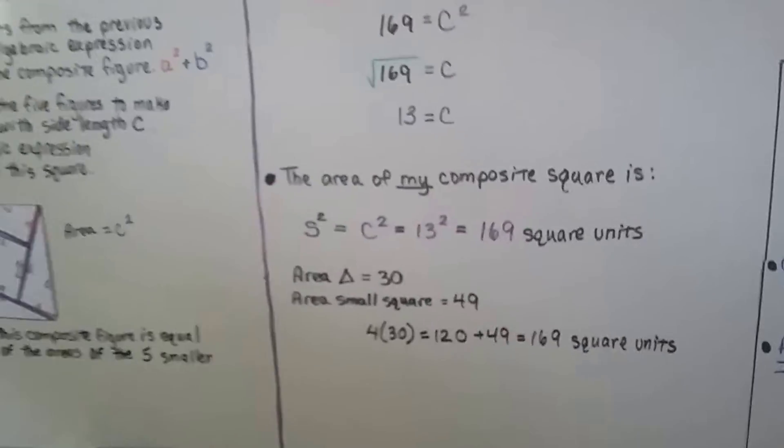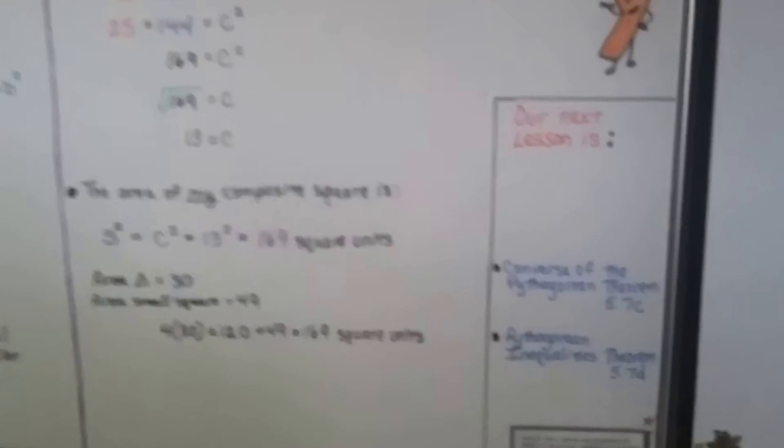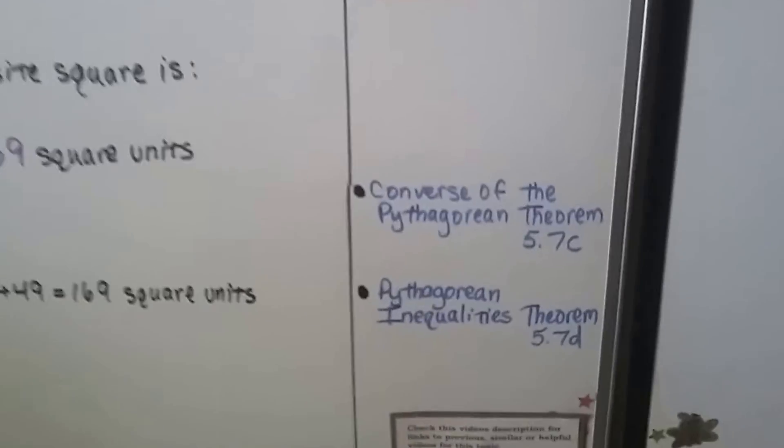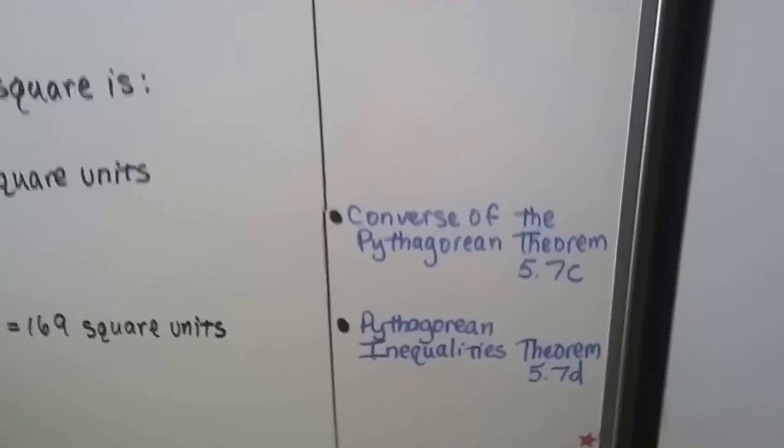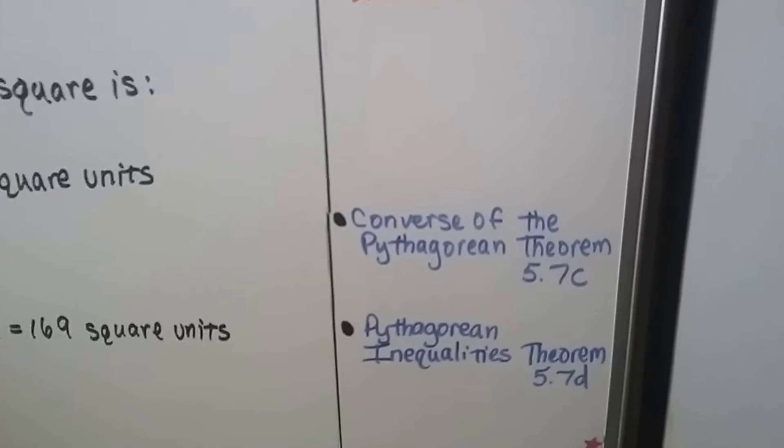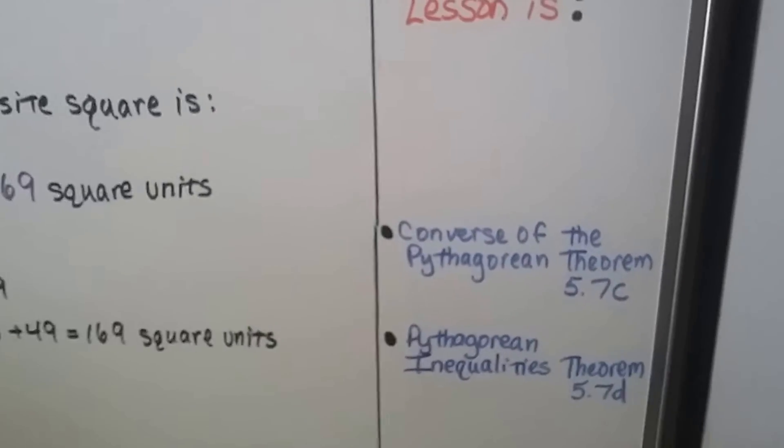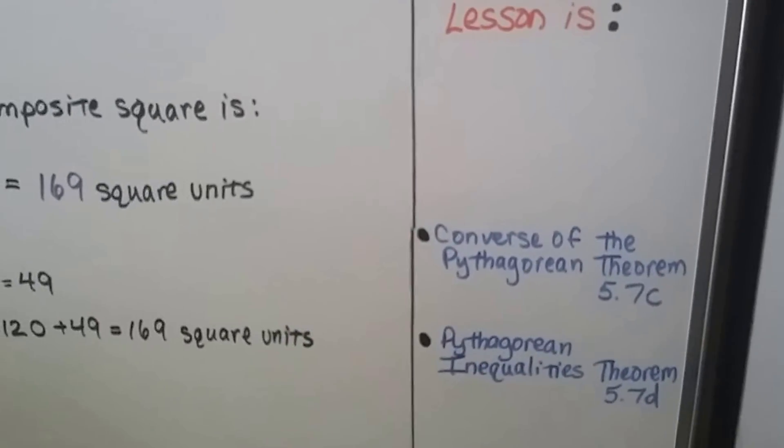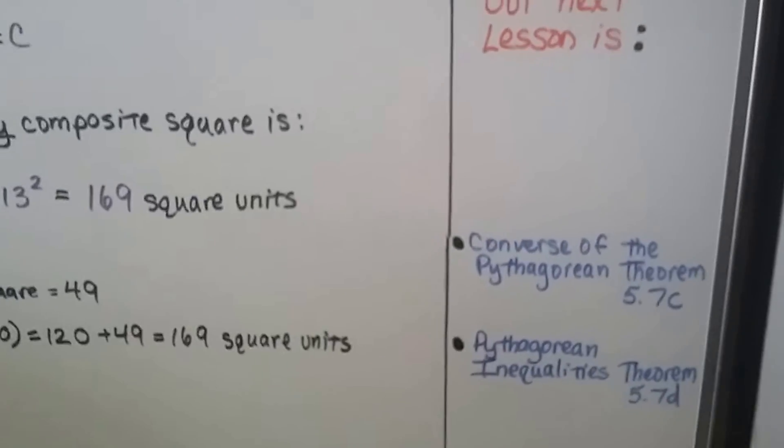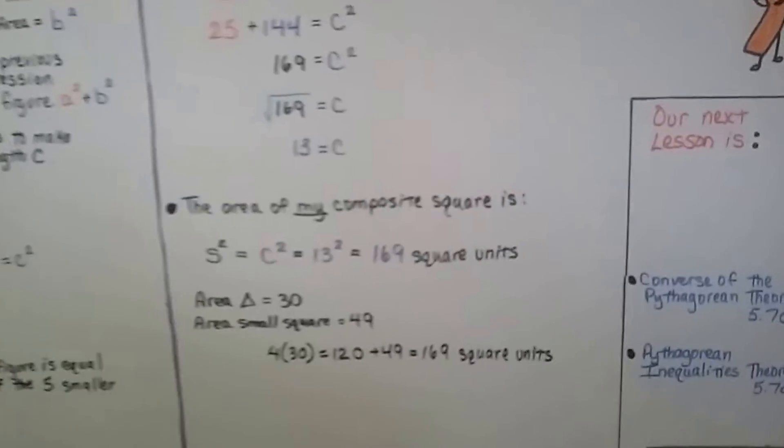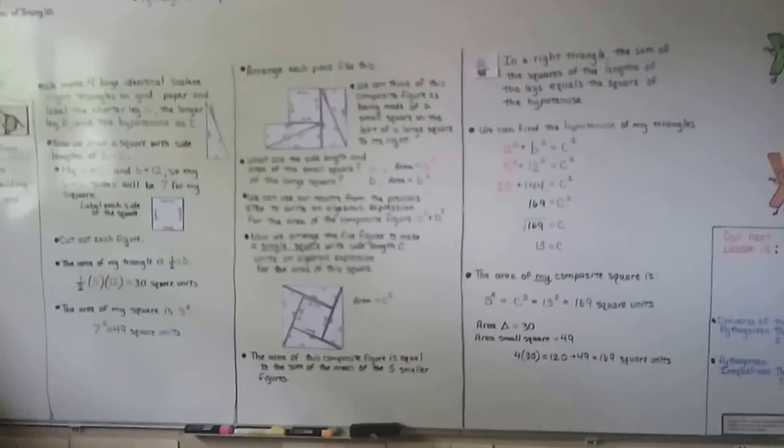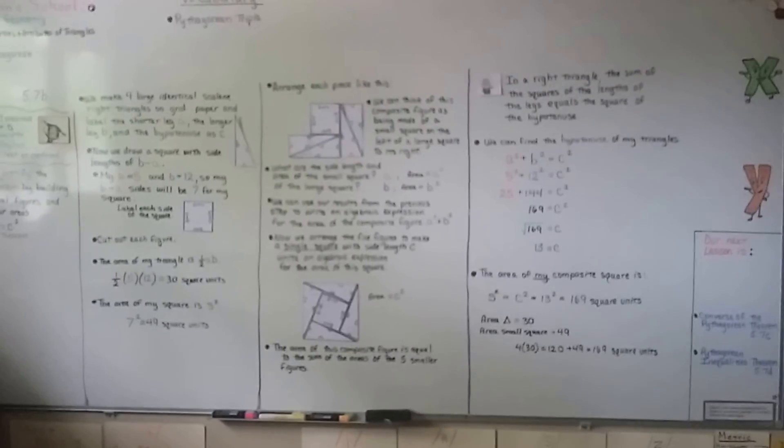So I hope this is helpful, and we're going to continue on with 5.7, with 5.7c. We're going to do the converse of the Pythagorean theorem. After that, we're going to do the Pythagorean inequalities theorem. Make sure you remember how to simplify radicals, and make sure you remember how to FOIL, okay? Doing binomials, alright? So, have a great day, I'll see you next time. Hit that like button.